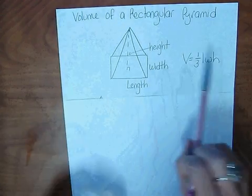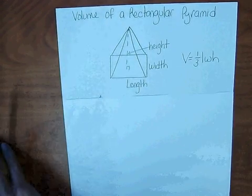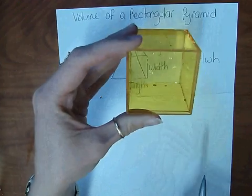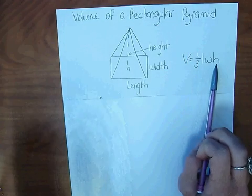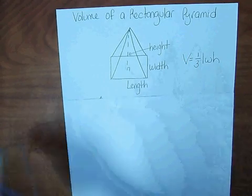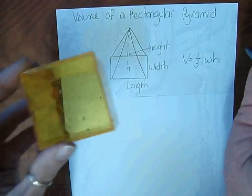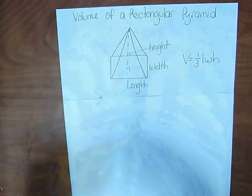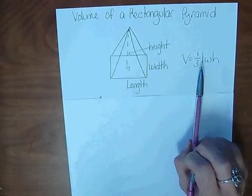So we know how to find the volume of a prism: length times width times height. Remember, the pyramid - it took three pyramids to fill the prism, so it is one-third the size. So one-third length times width times height.